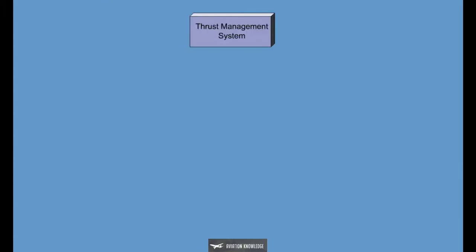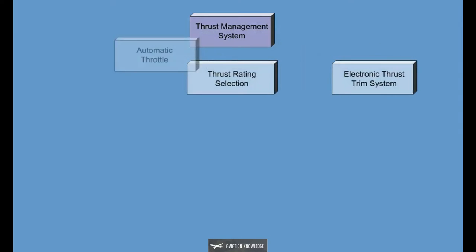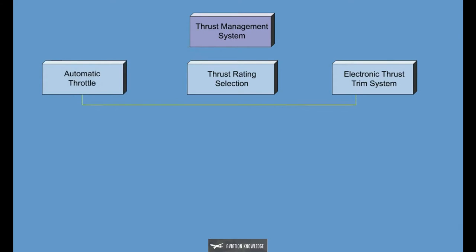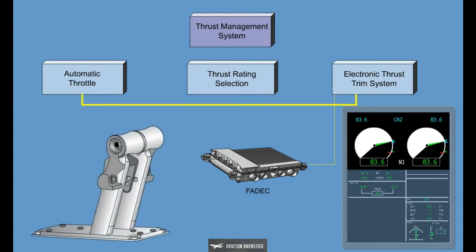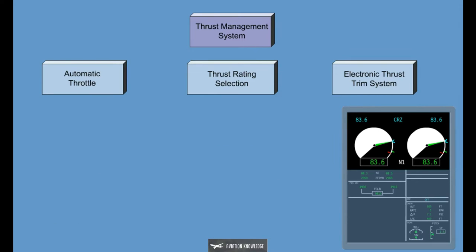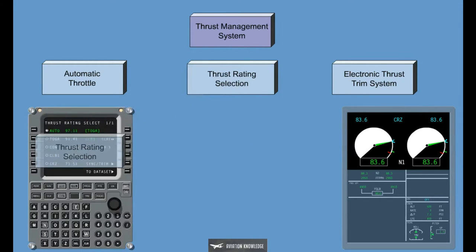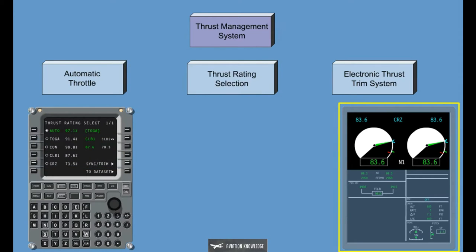The Thrust Management System consists of the Electronic Thrust Trim System, Thrust Rating Selection, and the Automatic Throttle. The Electronic Thrust Trim System controls the fine tuning of the Automatic Throttle, provides in-one command synchronization, and passes engine synchronization commands to the FADEC. The Electronic Thrust Trim System is coupled to the Automatic Throttle; it is disabled when the Automatic Throttle is disengaged. The Thrust Rating Selection computes the active engine rating for the current phase of flight and for display on the ICUS, and operates independently of the Automatic Throttle.